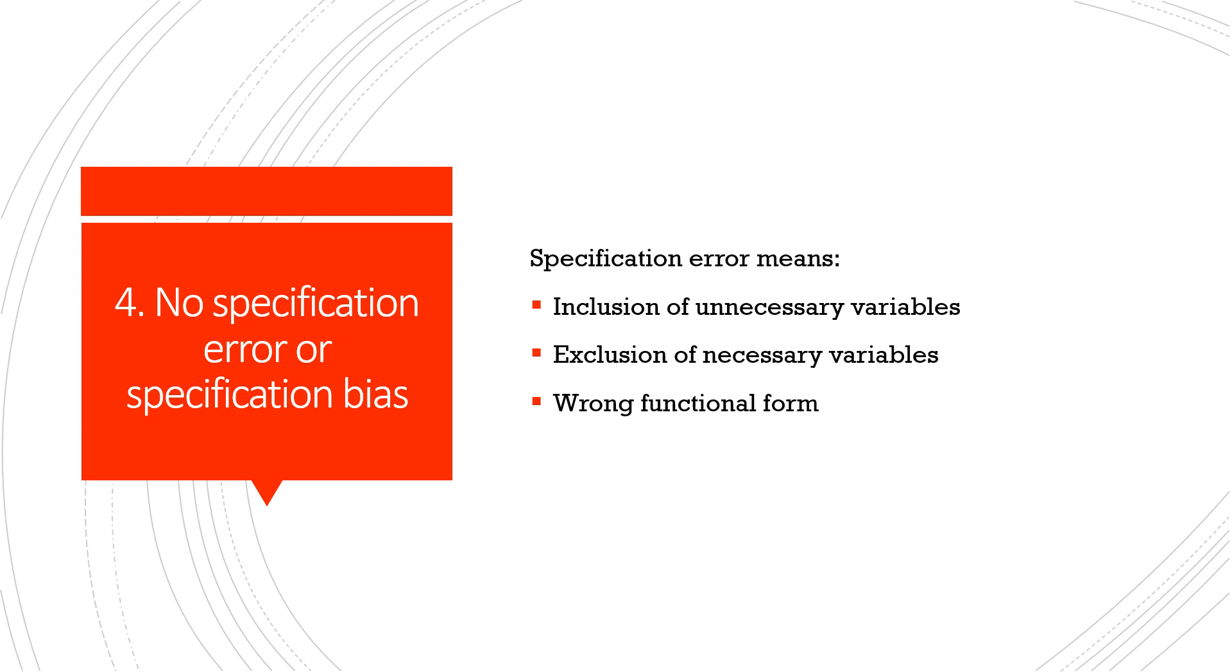The fourth assumption is no specification error or specification bias in the model. So the specification error basically means inclusion of unnecessary variables, or exclusion of necessary variables, or wrong functional form. So let's take an example and understand what the inclusion and exclusion of variable means. Let's imagine that we are constructing a model to estimate the consumption expenditure. For that case, if we are taking marks of a student as an independent variable, do you really think that marks are really important in determining the consumption of a person? No. So it clearly means that we have included an unnecessary variable in the model. So this leads to specification error.